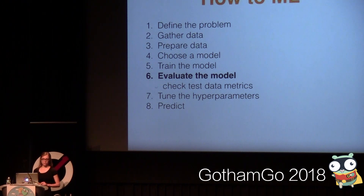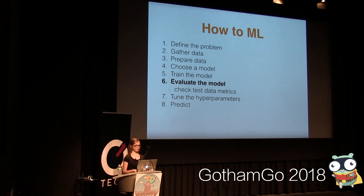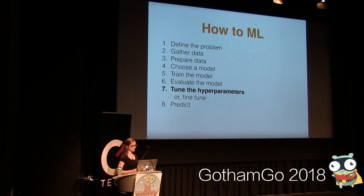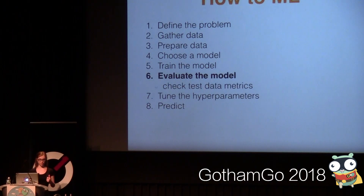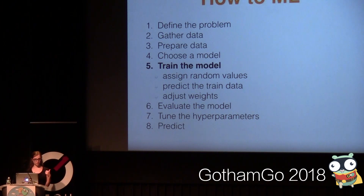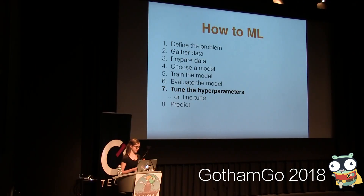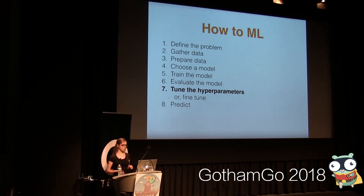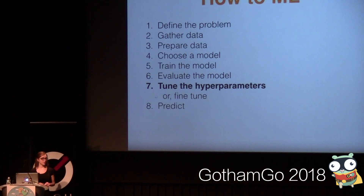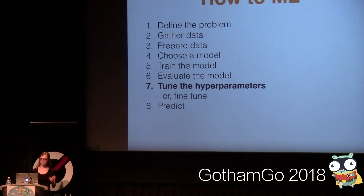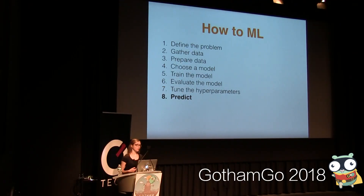Then we finish training and move to evaluation, which means we take the ready model and run it on the test data — the remaining 25%. Based on the results, we do tuning of the hyperparameters, which is done manually, unlike the training step where values change automatically each step. And many times, after you do this prediction and see the values, you'll go back to step four or five and retrain with a different equation, or even choose a different model because you realize it wasn't the right choice.